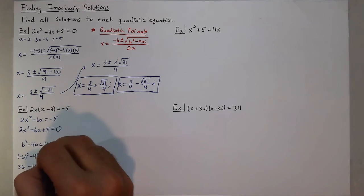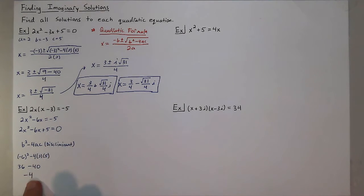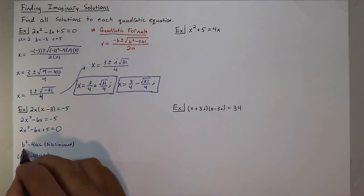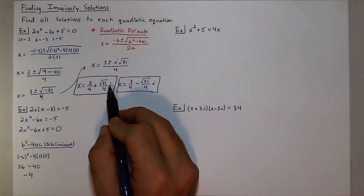So the fact that the discriminant is negative, what I know is that there won't be a real solution, so we'll be getting an i as a solution.